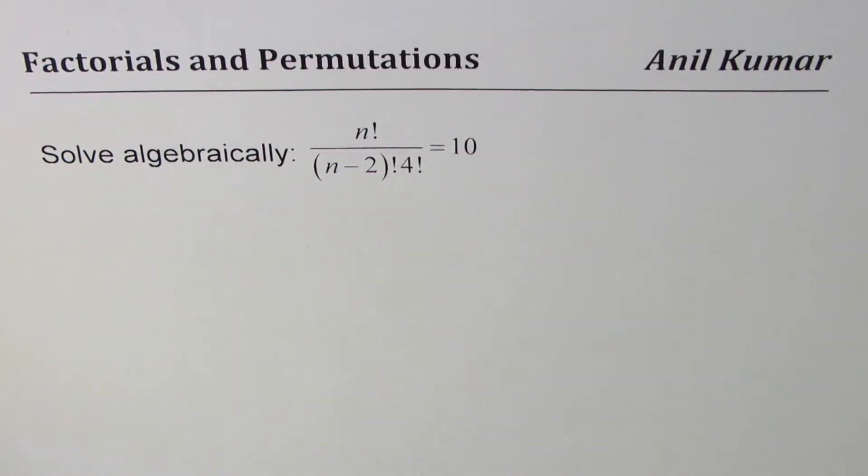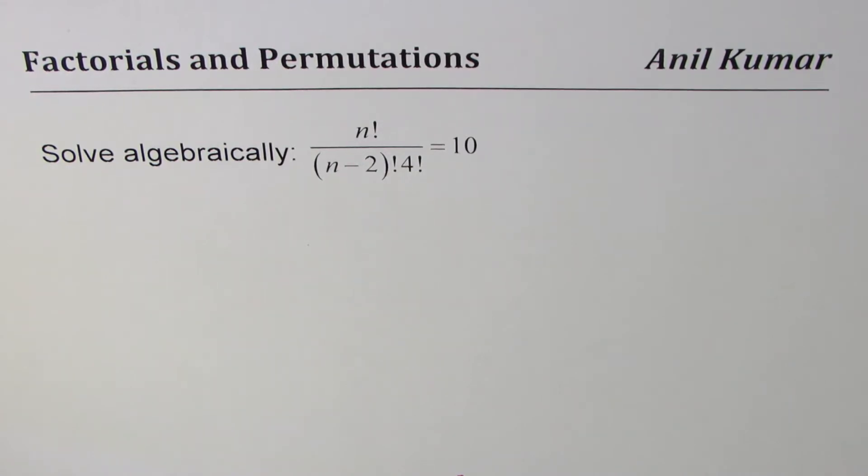I'm Anil Kumar. We'll understand factorials in this particular video. Solve algebraically: n factorial divided by (n minus 2) factorial times 4 factorial equals 10.